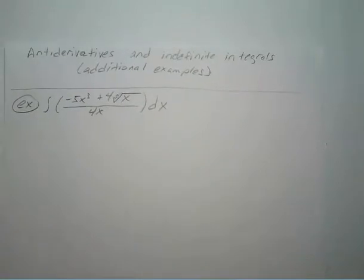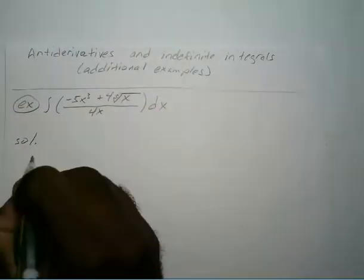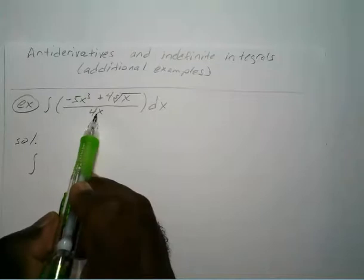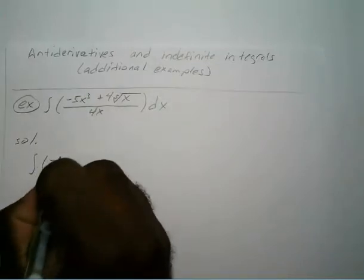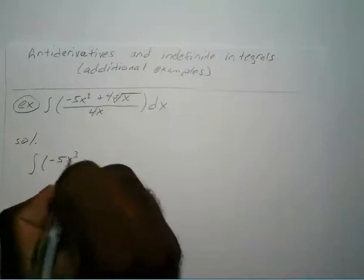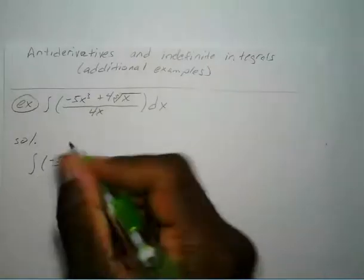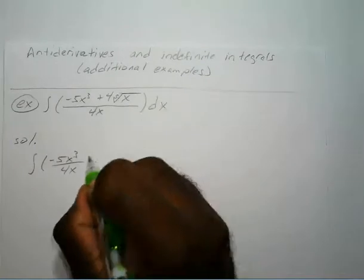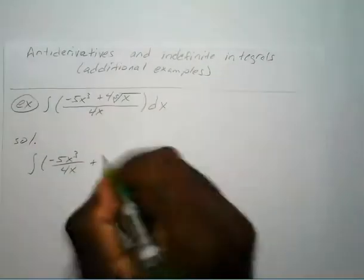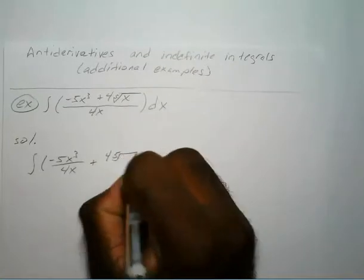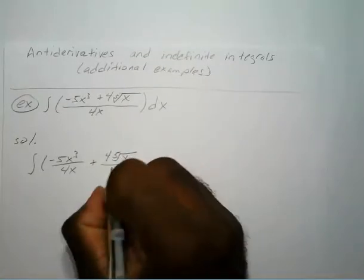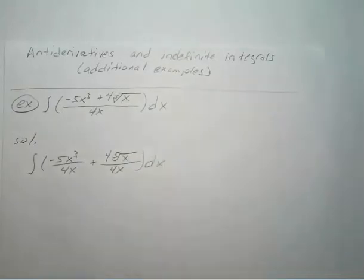With this one, once again you can break it down to individual terms. You have that one denominator, you can just separate that. So you have the integral of negative 5x to the third over 4x plus 4 times the fifth root of x over 4x with respect to x.